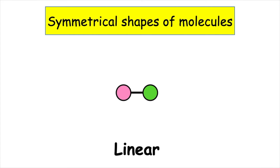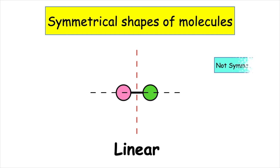So what happens if we have two different types of element joined in a linear structure? Well, across the x-axis we would have a line of symmetry — it would be the same on either side. However, when we draw a line of symmetry down the y-axis, we can see that it is not mirrored on either side, so this would be an example of linear which is not symmetrical.